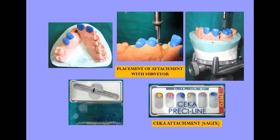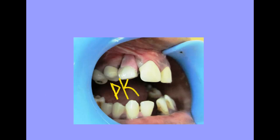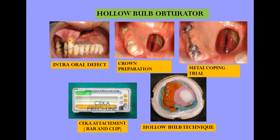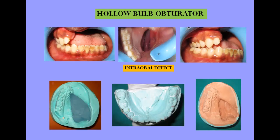This is another case where we came across a very small defect and had to use a very precise mechanism. We used semi-precision attachments, and you can see that the prosthesis was retained with the help of these attachments. One more case where semi-precision attachments and a bar-and-clip mechanism were used to retain and improve the stability of this maxillary obturator.